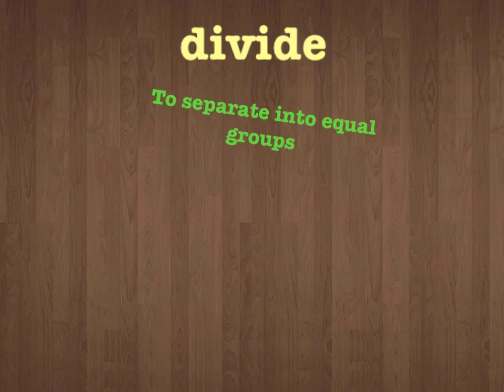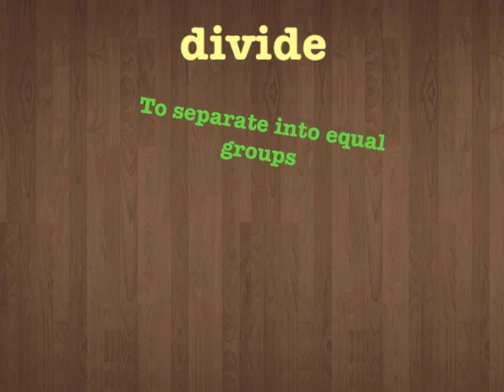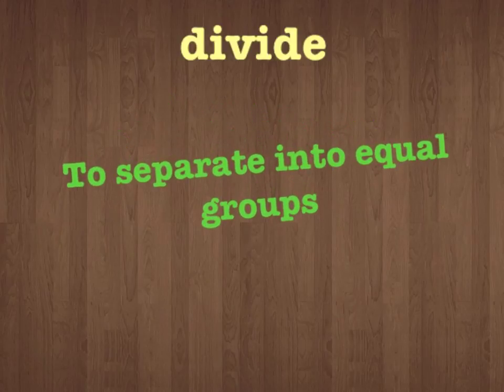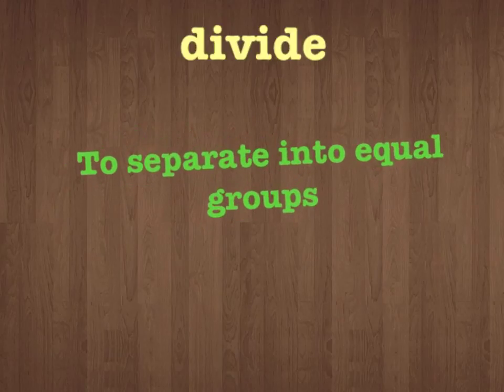The first thing we need to do is look at the word divide. We know that when you multiply, you're putting equal groups together. But when you divide, you are separating the number into equal groups. With multiplication, we're putting the equal groups together, adding them together, but with division, we are separating a big number into equal groups.